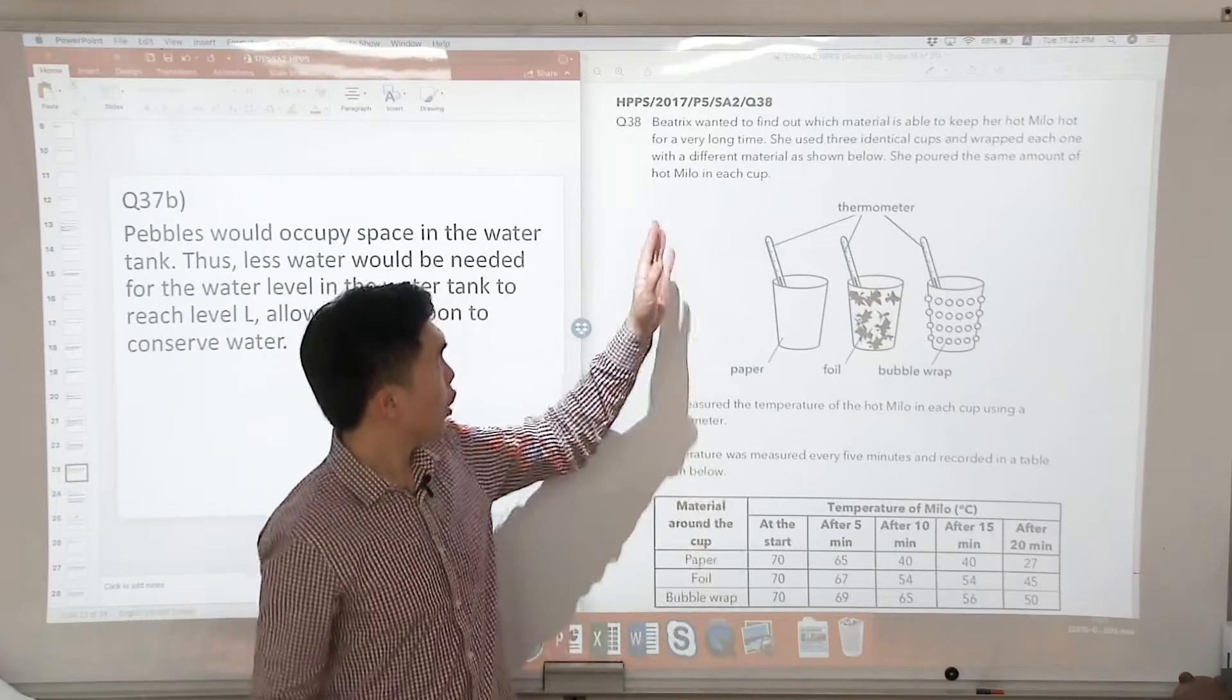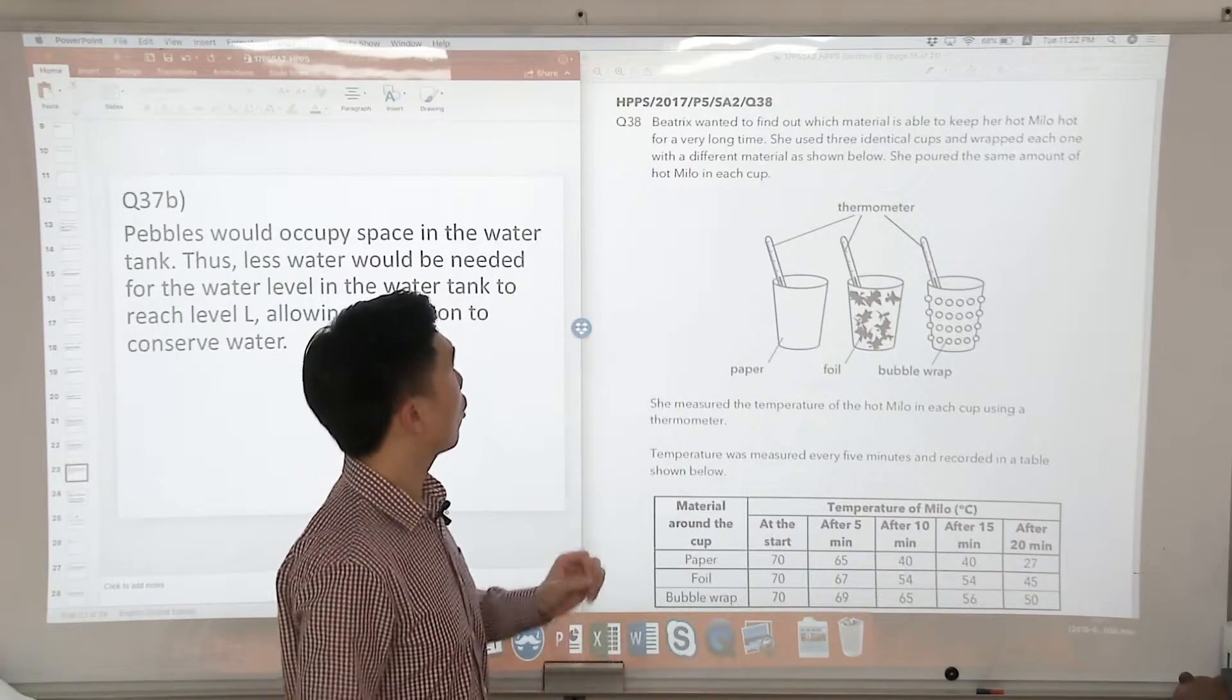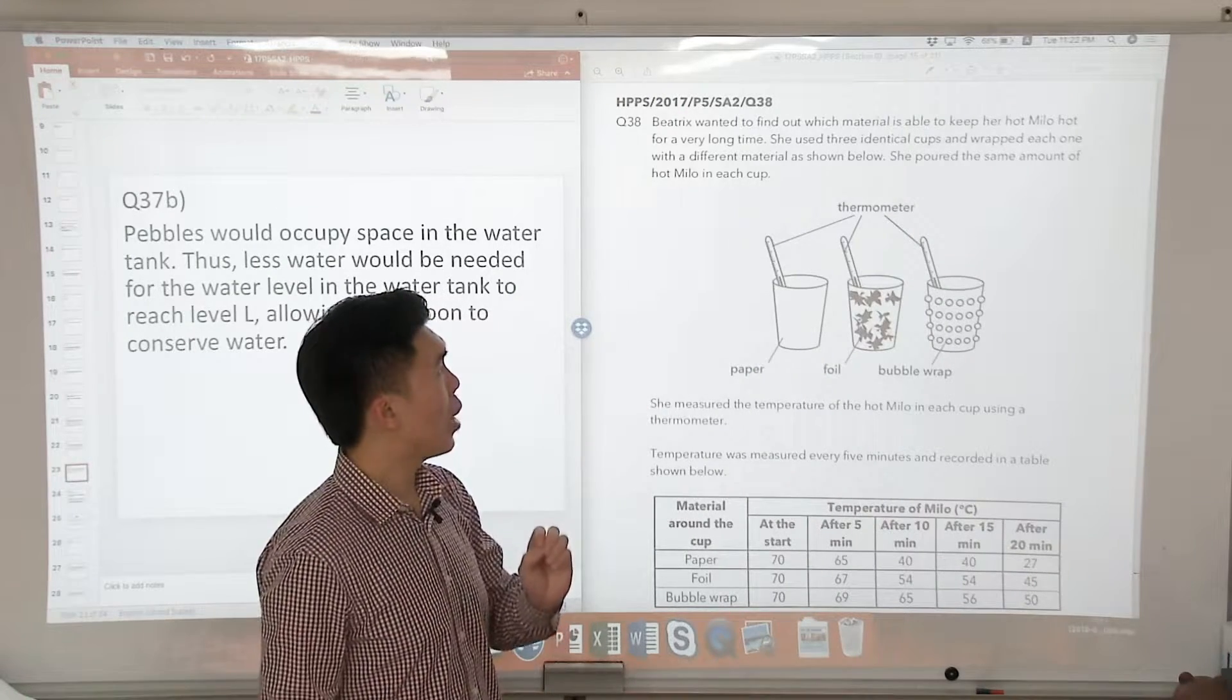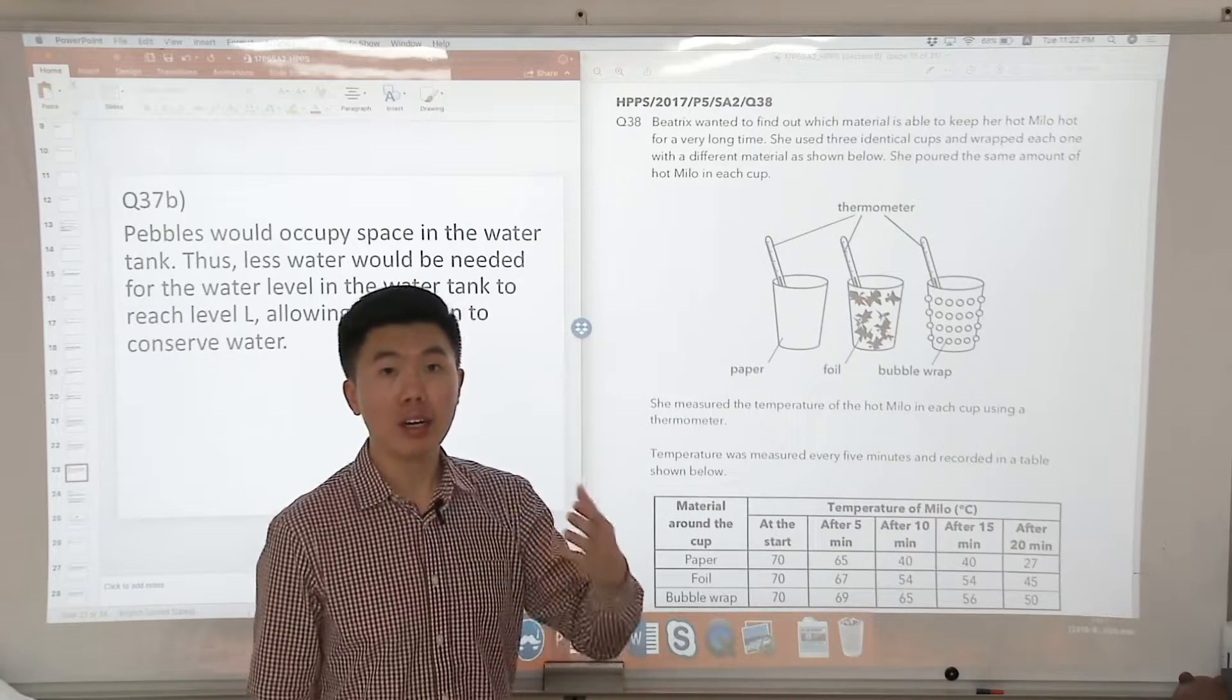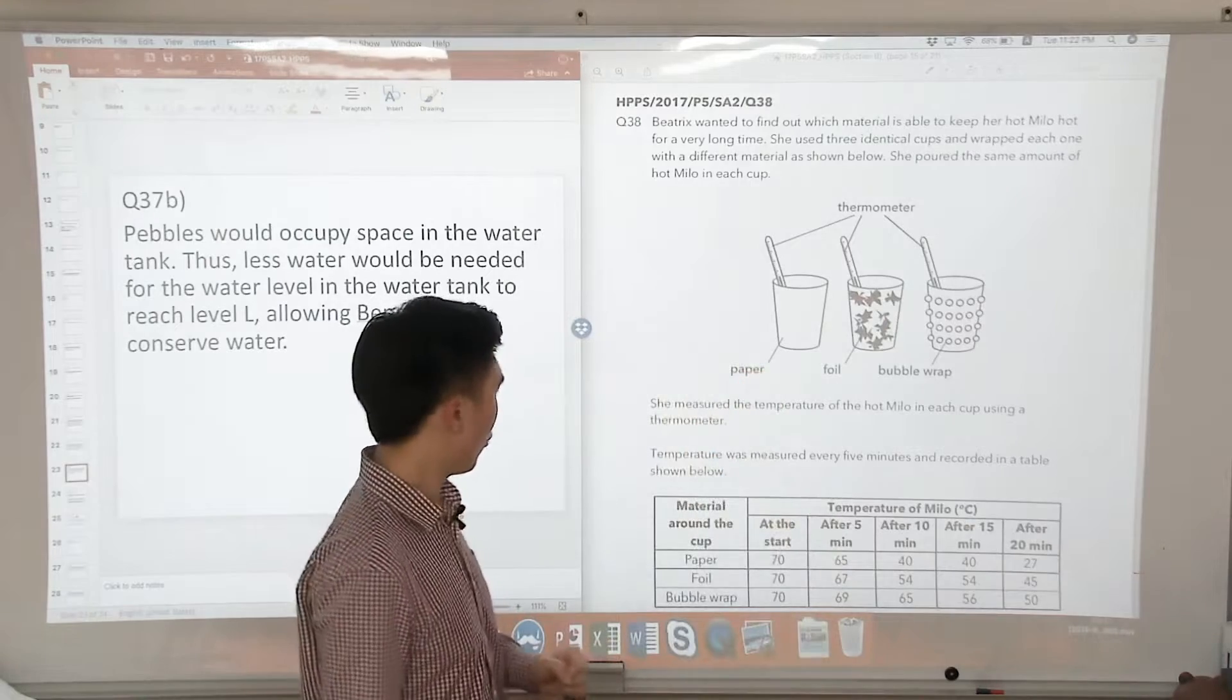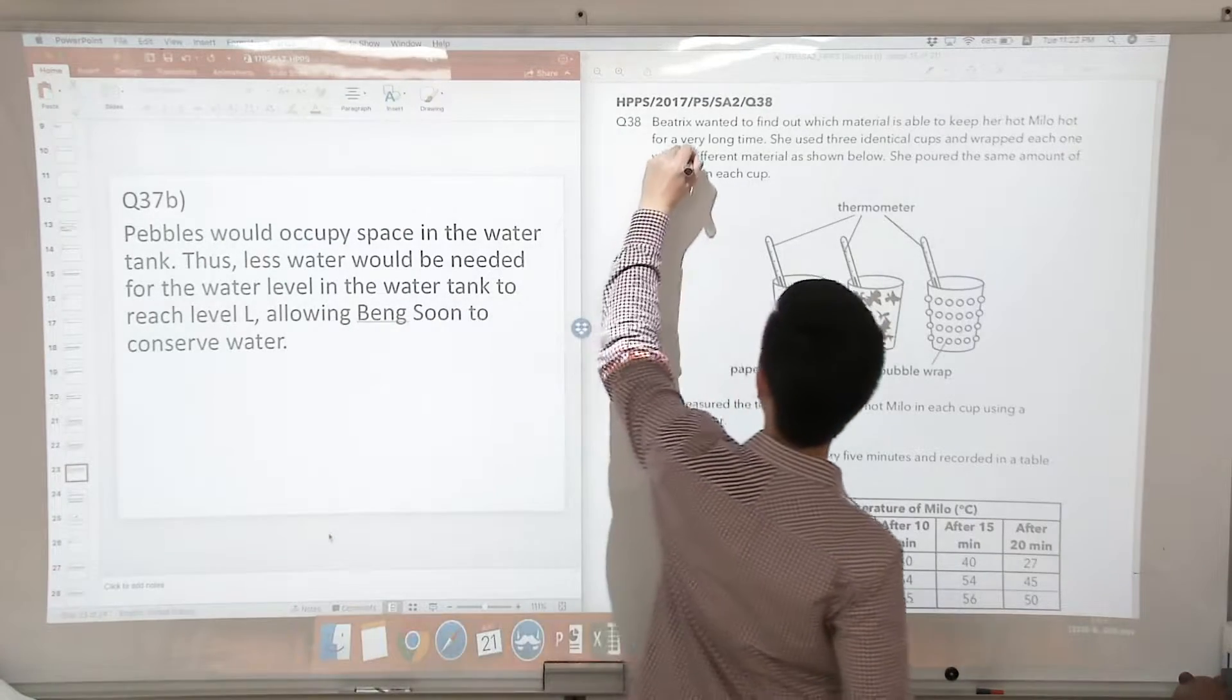Question 38. Beatrice wanted to find out which material is able to keep her hot Milo hot for a very long time. She used three identical cups and wrapped each one with a different material as shown below. So we have three different materials: paper, foil, and bubble wrap. I want you to put a box around this part here, different materials.